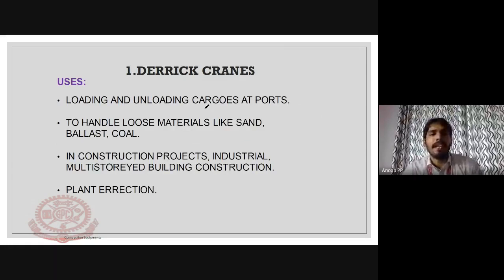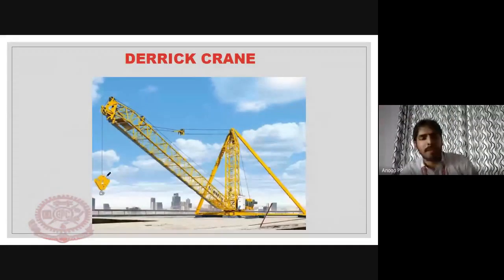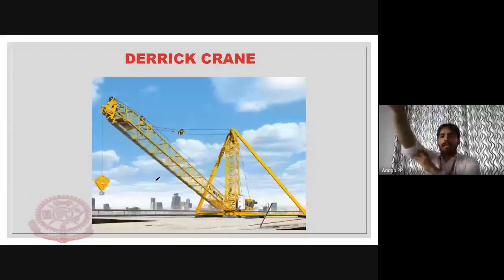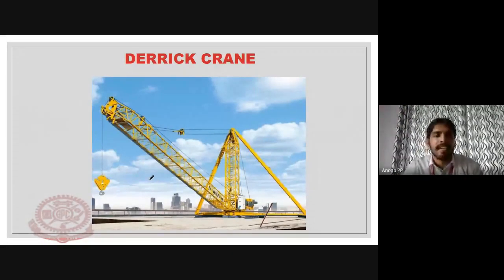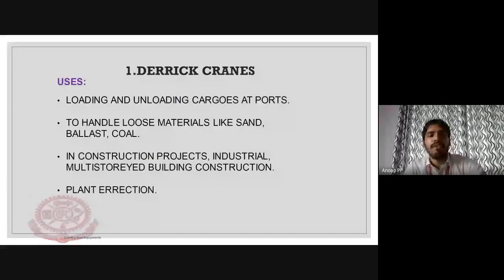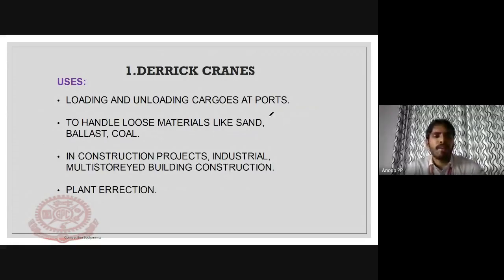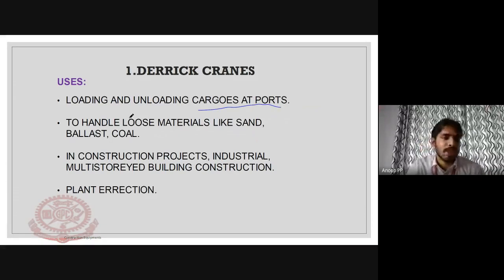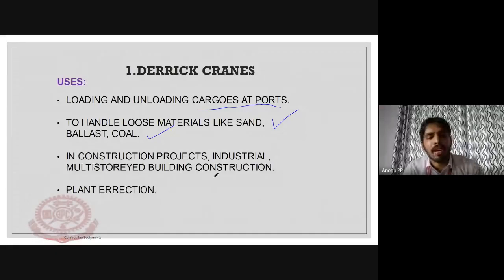The derrick crane has a boom that can revolve around 360 degrees. It is commonly seen abroad, such as in the UAE or Abu Dhabi. It normally has a capacity of around 200 tons and is used to handle loose materials like sand, ballast, and coal. Derrick cranes are used in construction projects, industrial multi-story buildings, and power plants.